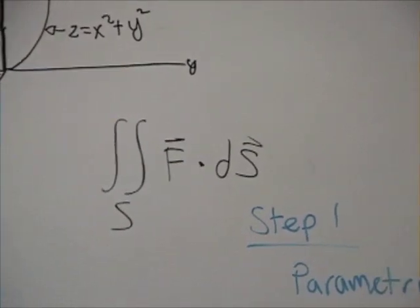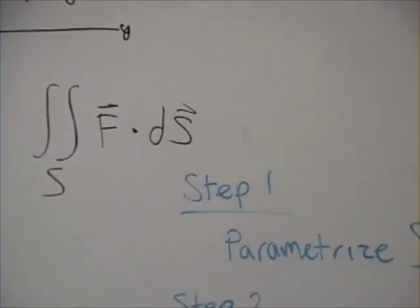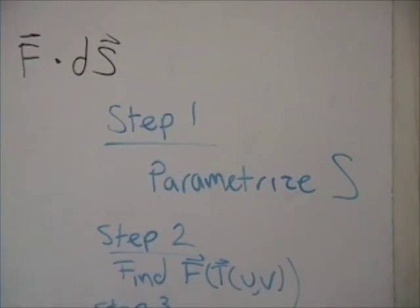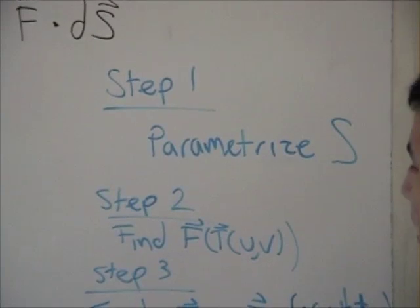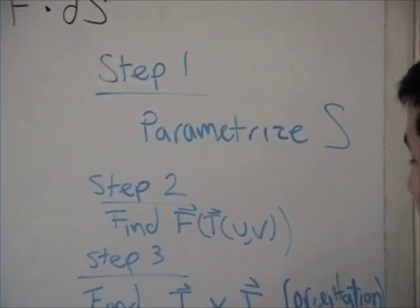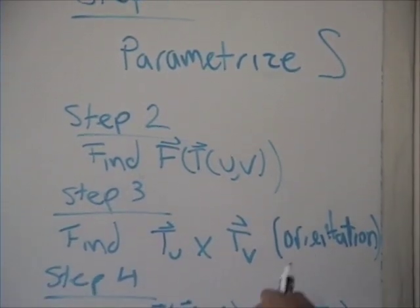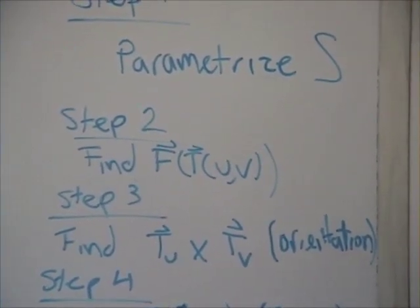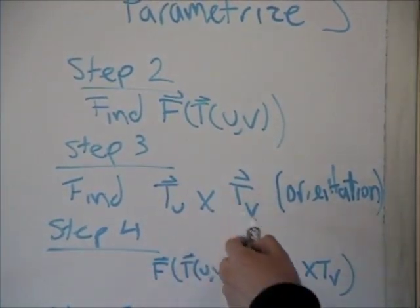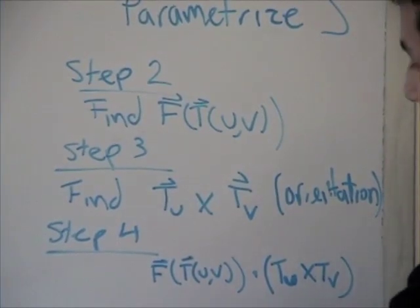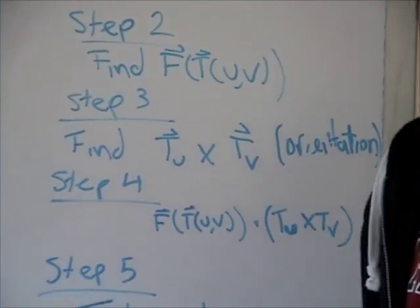The first step is to parameterize S. Step two is to find F(T(u,v)). Then step three is to find the cross product of T_u and T_v and check for orientation. Step four is to dot F and the cross product of T_u and T_v. And then step five is just to integrate.